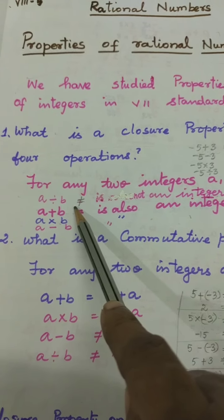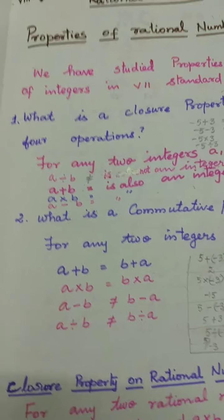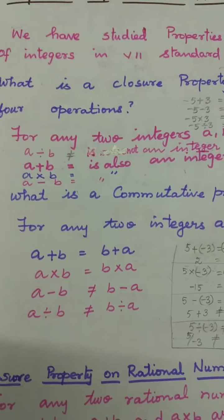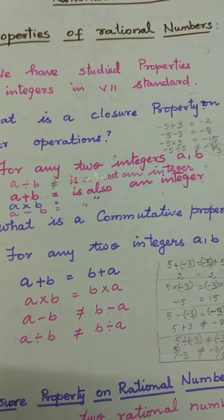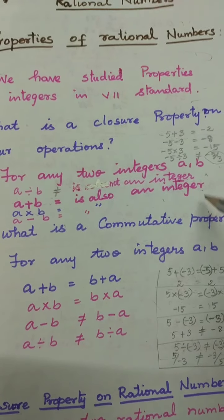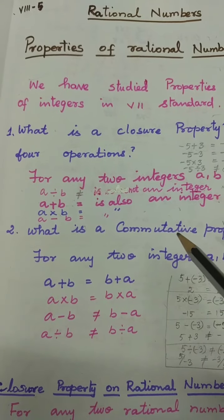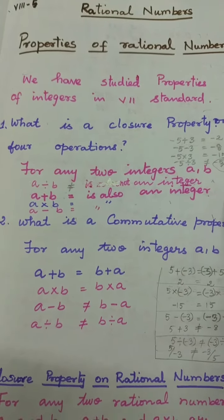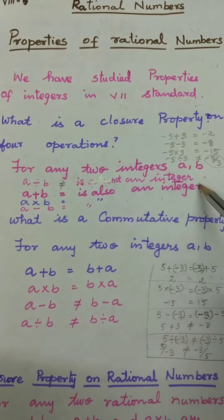Then A divided by B is not necessarily an integer. A divided by B means, for example, 1 divided by 2 will come as 1 by 2, so it is not an integer. What does it mean by integer? The negative natural numbers and positive natural numbers along with zero — that is the integer. So A by B is a fraction, and therefore it is not an integer. A divided by B is not equal to an integer.